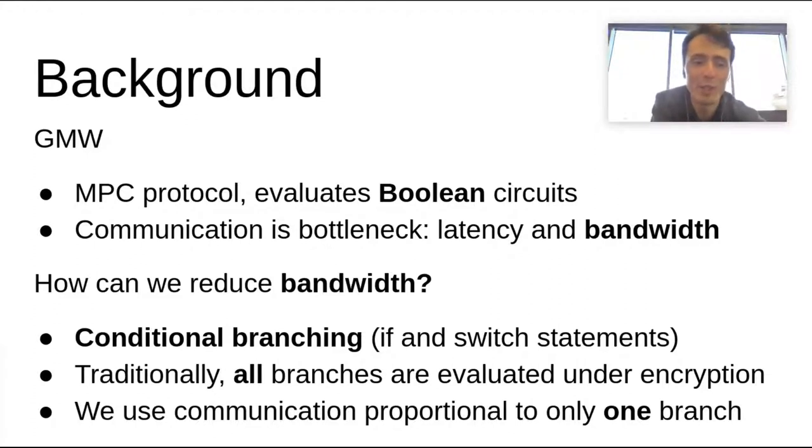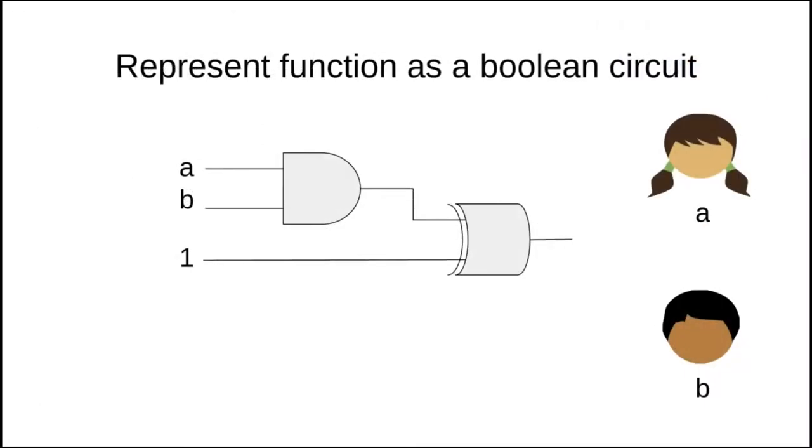We start by reviewing the GMW protocol because our improvement directly modifies the protocol. The GMW protocol evaluates a function in four steps. First, the function is represented as a boolean circuit. Next, the parties secret share their input values and send the appropriate shares to other parties.